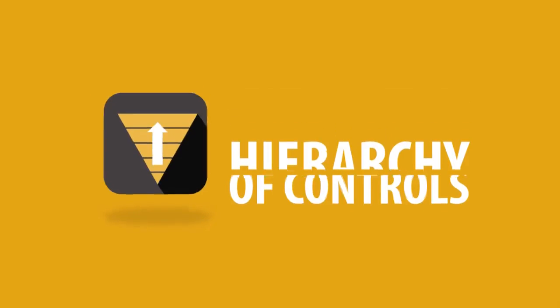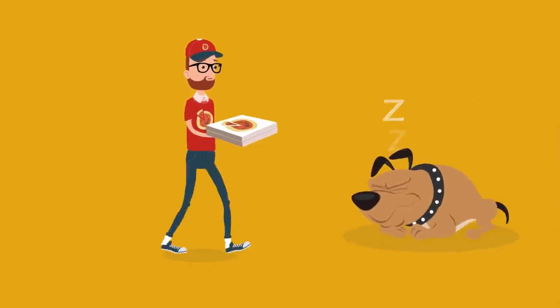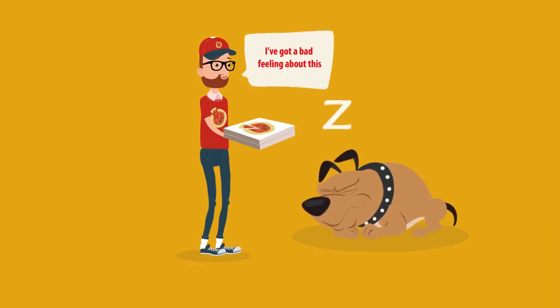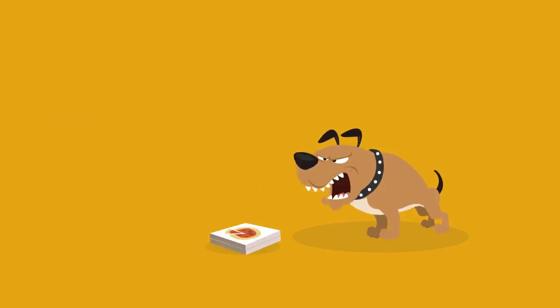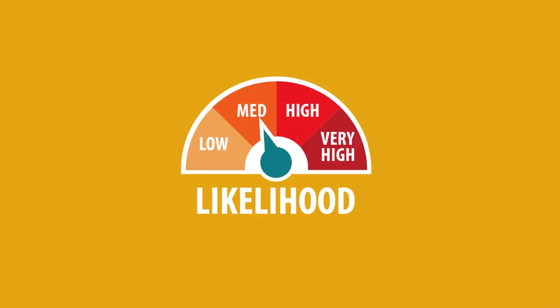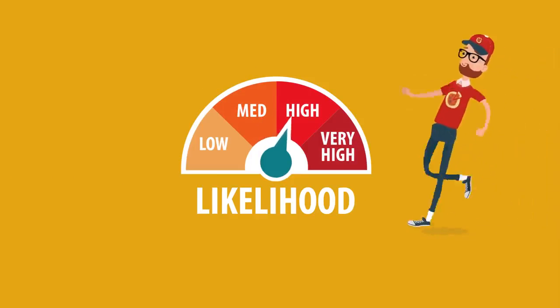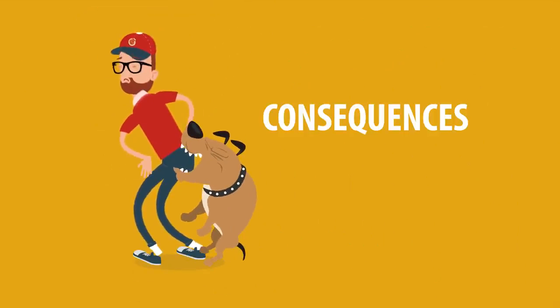The hierarchy of controls. The level of risk associated with an event can be established by assessing the chance of the event happening — likelihood — and the potential harm or damage the event could cause — consequences.